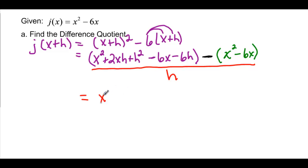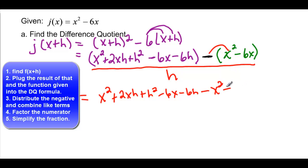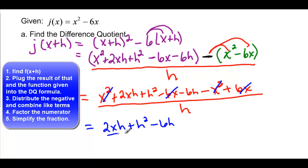So let's start simplifying. x squared plus 2xh plus h squared minus 6x minus 6h minus x squared when I distribute, and plus 6x when I distribute all over h. So let's go simplifying. x squared and negative x squared cancel. And negative 6x and positive 6x cancel. And I'm left with 2xh plus h squared minus 6h all over h.